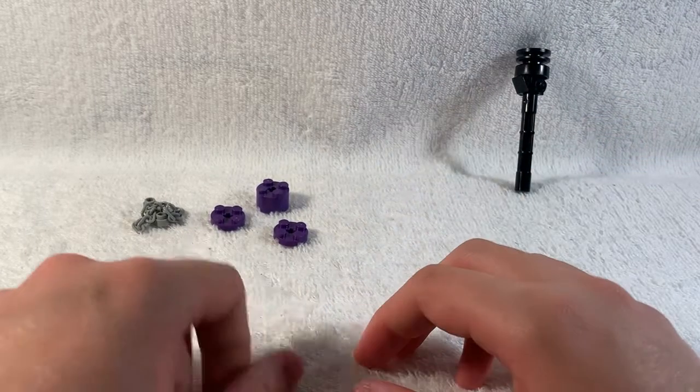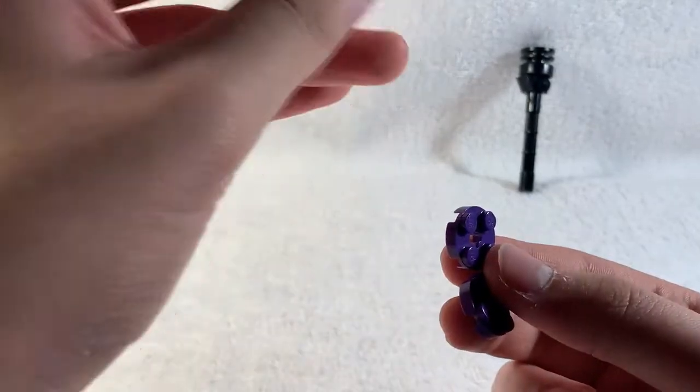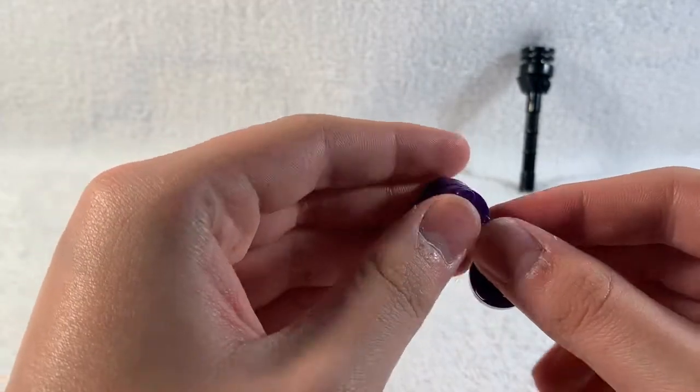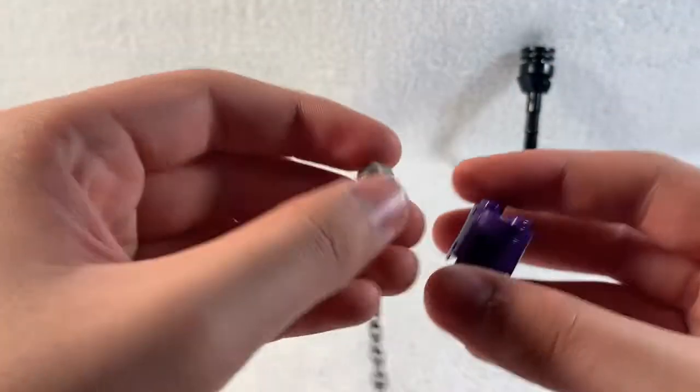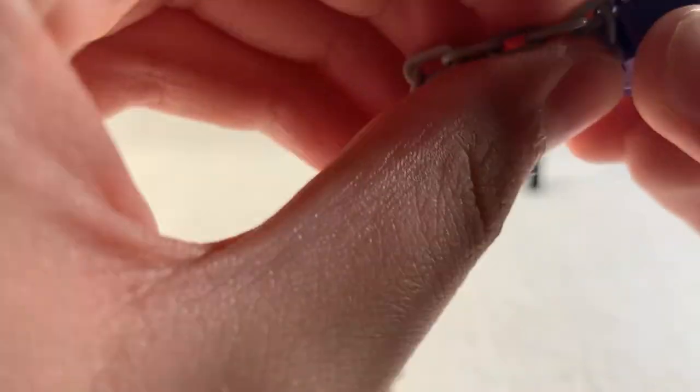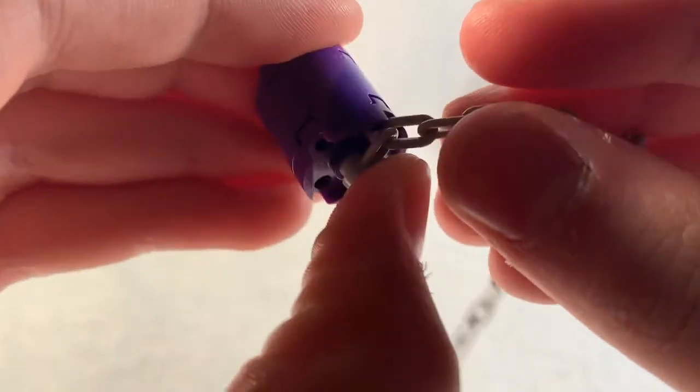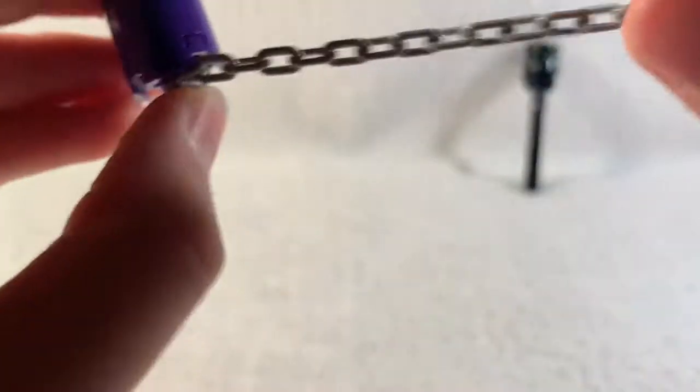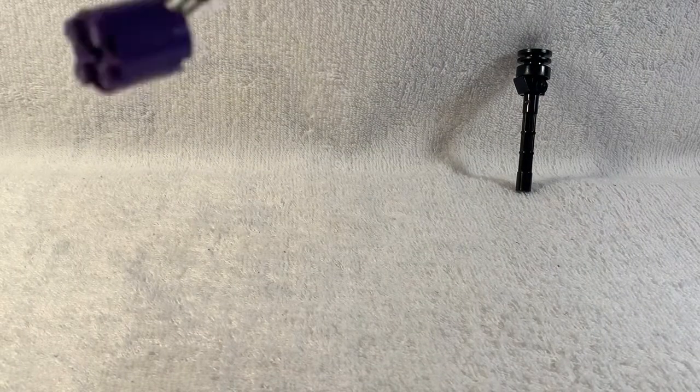Then for the Energon Mace, very simple. Just take the two two-by-two round plates with the two-by-two round brick, both in purple. One plate on the top, one plate on the bottom. And then you take the chain, and what I like to do is make sure the chain lines up in between the little crevice right there. And it fits perfectly right there. Now that you have the Fusion Cannon and Mace done, let's assemble Megatron.